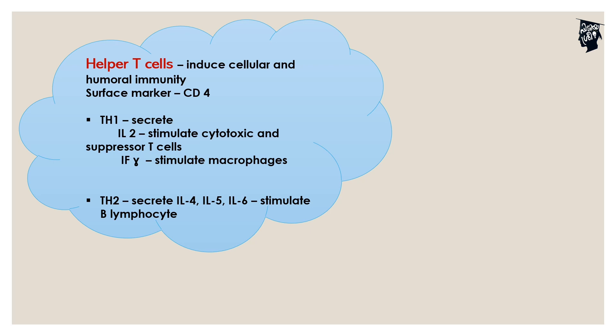Th2 secretes interleukin-4, interleukin-5, and interleukin-6. These cytokines stimulate the B-lymphocytes. B-lymphocytes mainly deal with humoral immunity. That means Th2 helper cells assist humoral immunity.